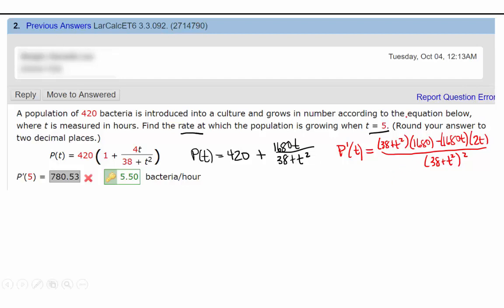So p prime of 5 is going to be 38 plus t squared is going to be 25 times 1680 minus 1680 times 5 times 10 over 38 plus 25 squared.